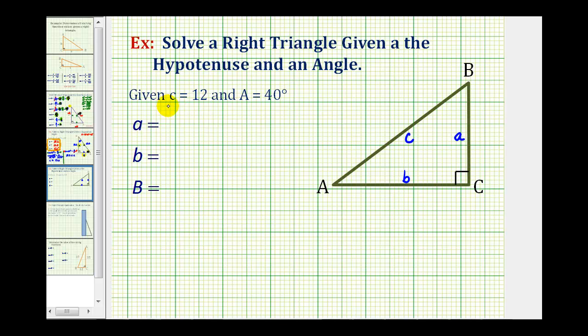We're given the length of side C, or the hypotenuse, is 12 units, and the measure of angle A is 40 degrees. Let's start by determining the measure of angle B. We know the sum of interior angles of a triangle must be 180 degrees, but it's also true that the two acute angles must be complementary or have a sum of 90. The measure of angle B must equal 90 degrees minus 40 degrees. So the measure of angle B is 50 degrees.